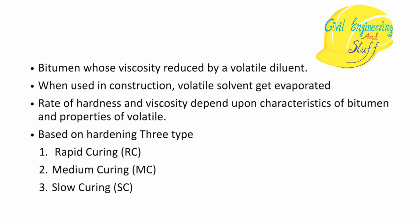Cutback bitumen is a bitumen whose viscosity is reduced by the addition of a volatile diluent. When you reduce the viscosity of conventional bitumen by the addition of some volatile diluent, that bitumen is called cutback bitumen. The bitumen is added with the volatile diluent, and when laid on the road surface, the volatile solvent evaporates, leaving a thin layer of bitumen.